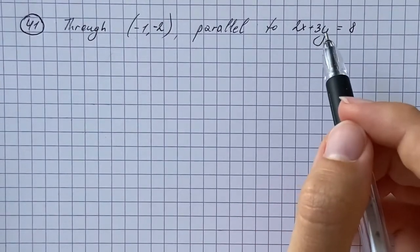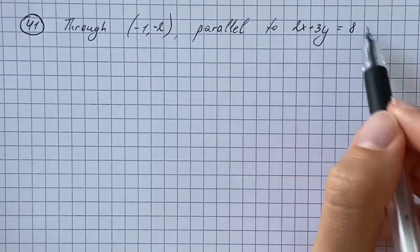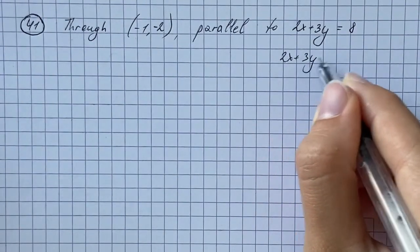So if the lines are parallel, they have the same slope. So we're going to find the slope of this line, 2x plus 3y equals 8.